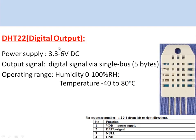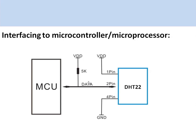The DHT22 is a common temperature and humidity sensor that sends data as a digital signal in 5 bytes: 2 bytes for temperature, 2 bytes for humidity, and 1 byte for checksum. It has a humidity range of 0 to 100% RH and a temperature range of minus 40 to 80 degrees Celsius. It is interfaced to a microcontroller using a pull-up resistor, and the microcontroller reads and displays or stores the temperature and humidity data.